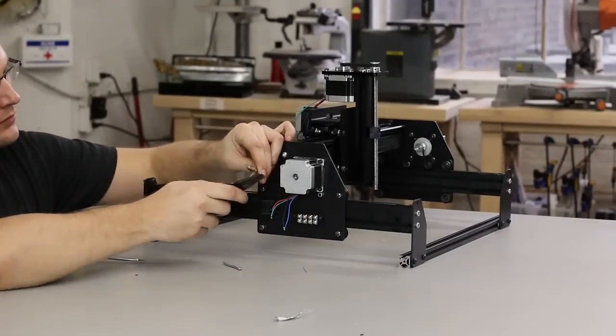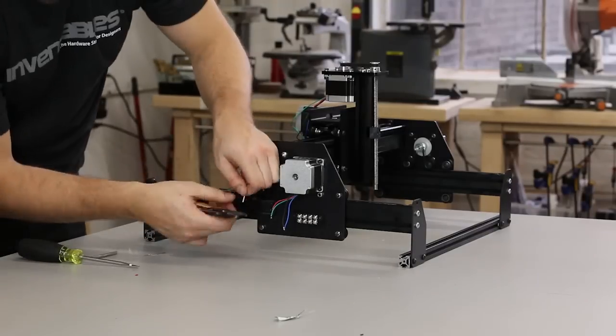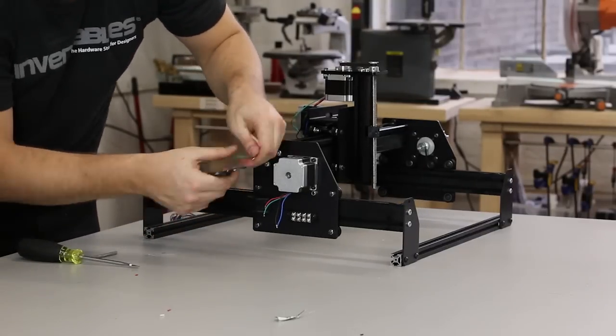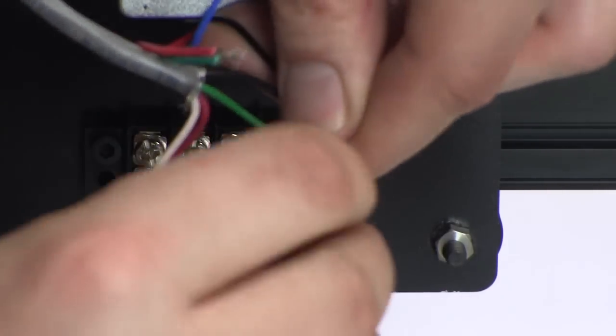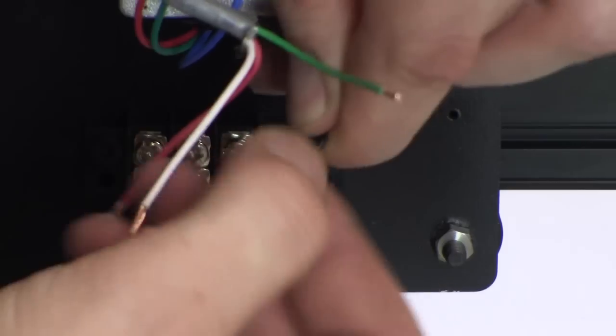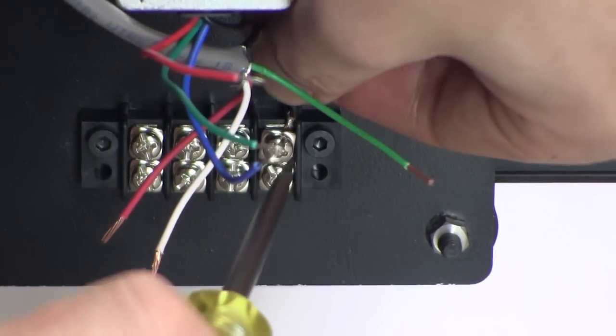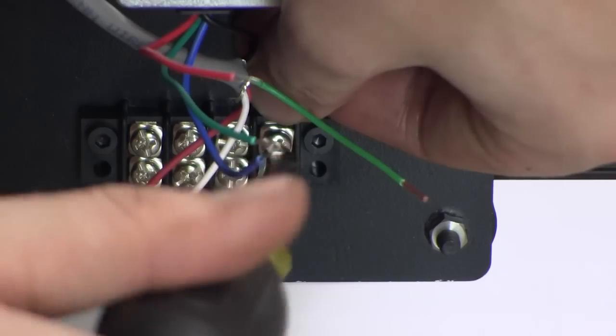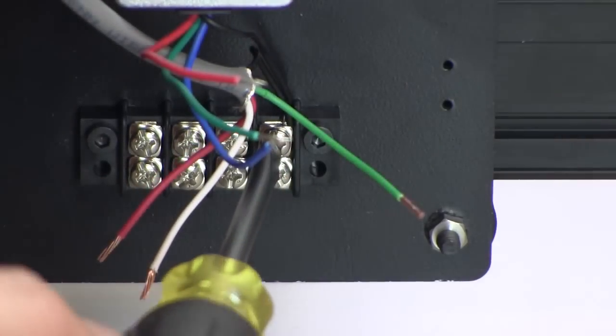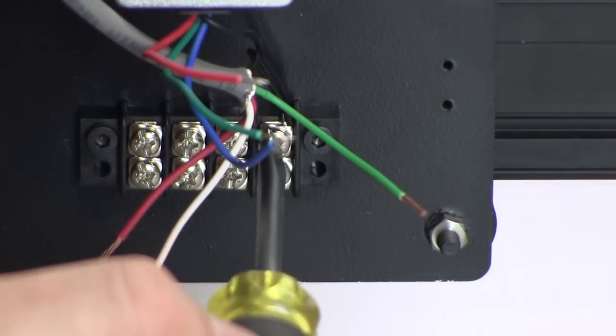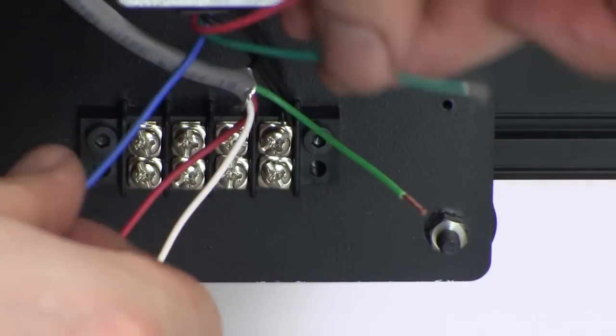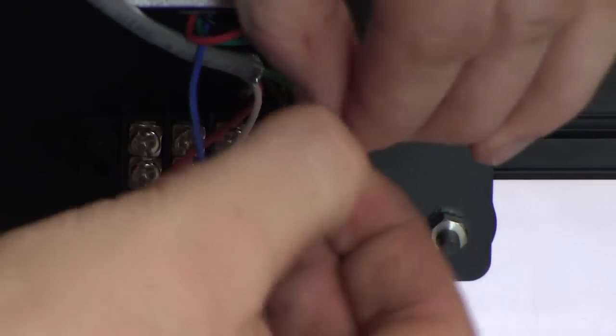Now strip the other end of the stepper cable and twist it together with the left Y-motor wires. Join the black wires together and put them in the right-most terminal. Join the green wires together and put them in the next terminal.